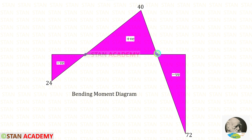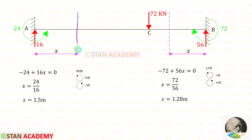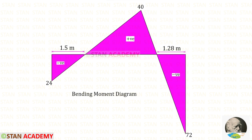At two points in the beam, the bending moment becomes zero. We can make sections in the beam to find those distances. I have made two sections: the first at a distance x from point A, and the second at a distance x from point B. In the first section we use the right-hand side rule to find x, and in the second section we use the left-hand side rule to find x. Thank you for watching this video.